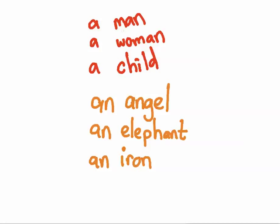You'll notice in the first three examples: a man, a woman, and a child. All of these examples use the word 'a,' and it's because all of the words—m, w, and c—are consonants.